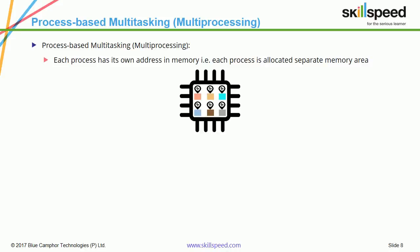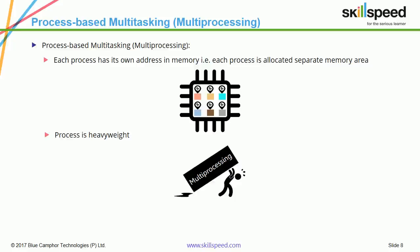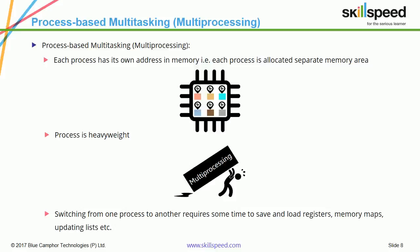Let us look at process-based multi-tasking. Each process has its own address in memory — that is, each process is allocated a separate memory area. A process is a heavyweight thing in terms of system resource consumption. Switching from one process to another requires some time to save and load registers, memory maps, updating lists, etc.